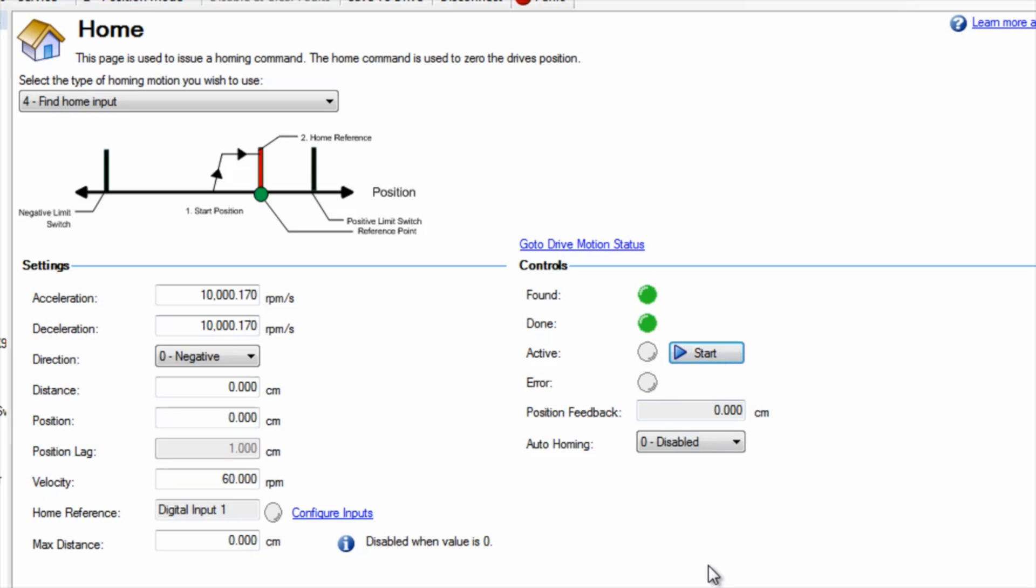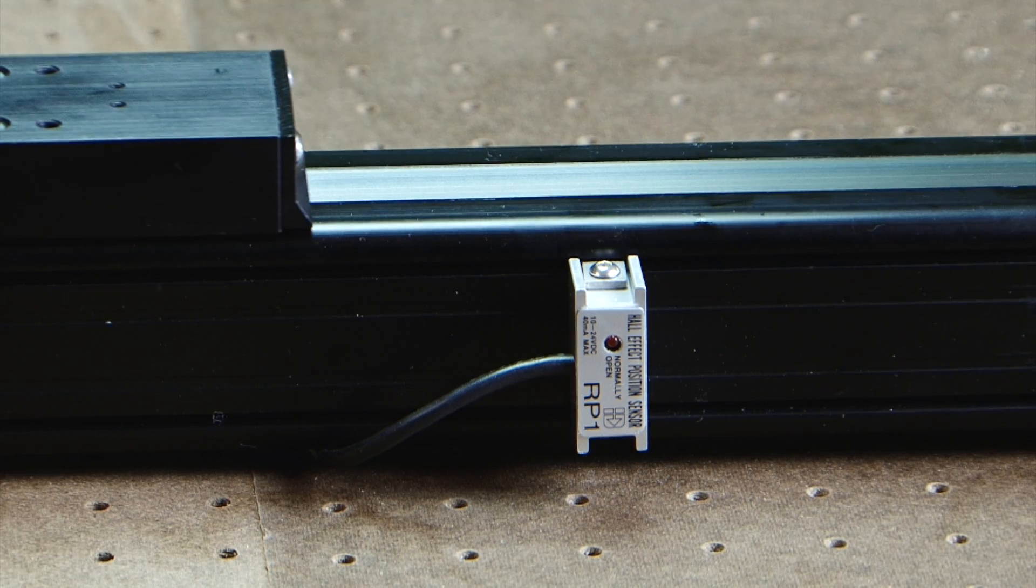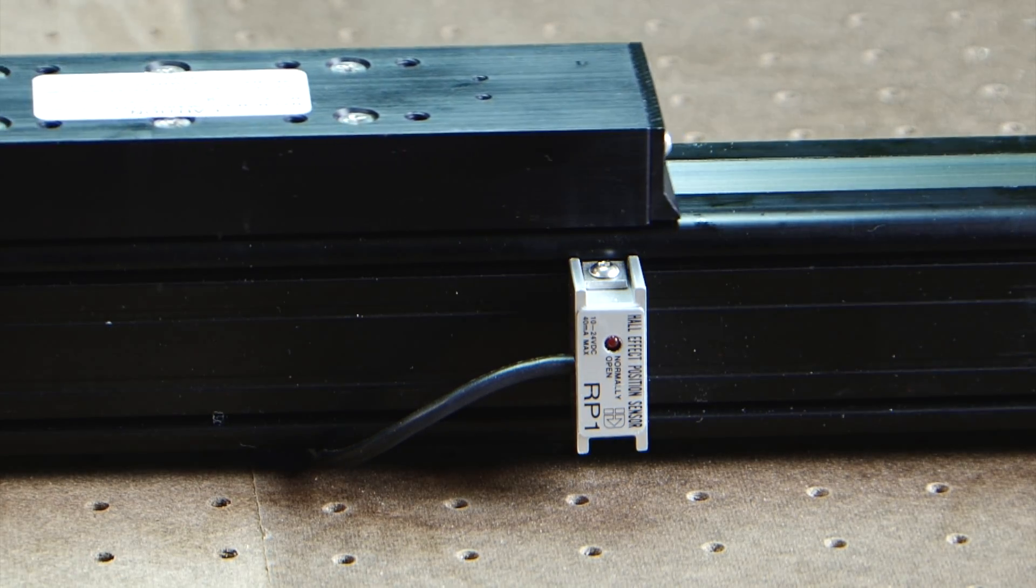When the actuator starts the home sequence on the positive side of the home reference, we see that the actuator moves to the switch and the sequence is complete.